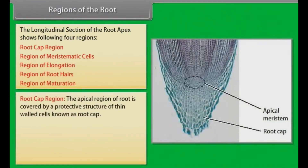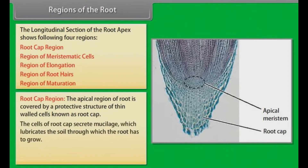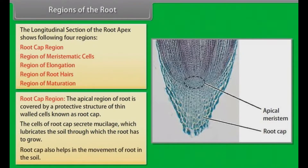Root cap region: The apical region of root is covered by a protective structure of thin-walled cells known as root cap. The cells of root cap secrete mucilage which lubricates the soil through which the root has to grow. Root cap also helps in the movement of root in the soil.